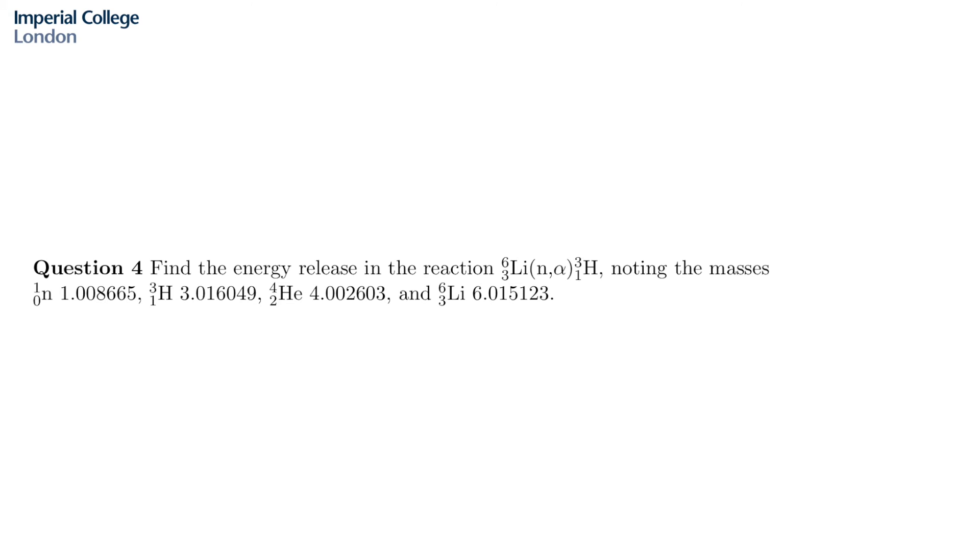Now question 4 is very similar. In question 4 we're asked to find the energy release in the reaction which is denoted as 6,3 lithium neutron alpha particle 3,1 hydrogen. Now if you remember how this is a shorthand notation for a nuclear reaction, the long way to write out such a reaction is that a neutron bombards our target nucleus which is the lithium, resulting in the transmutation to 3,1 hydrogen plus the emitted particle which is an alpha particle. We know that an alpha particle is the same as a helium nucleus.